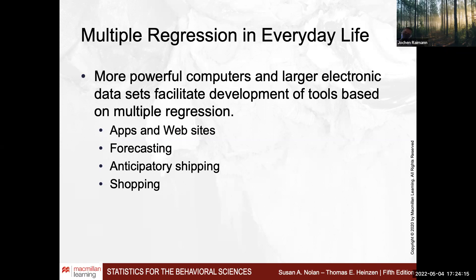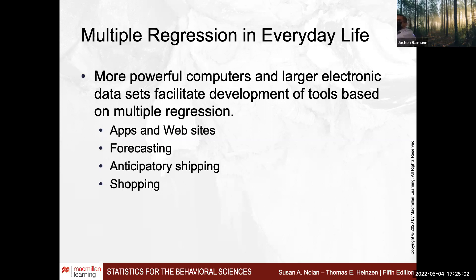Anticipatory shipping is an interesting example: larger online shops predict your shopping behavior so they can save money on shipping. They know what the population around a given location will buy in the coming week, so whatever you order will already be in the warehouse. Similarly, pharmacies and supermarkets know what their customers will want to buy and suggest items — particularly those with the largest profit margin. Your data is being collected and utilized.